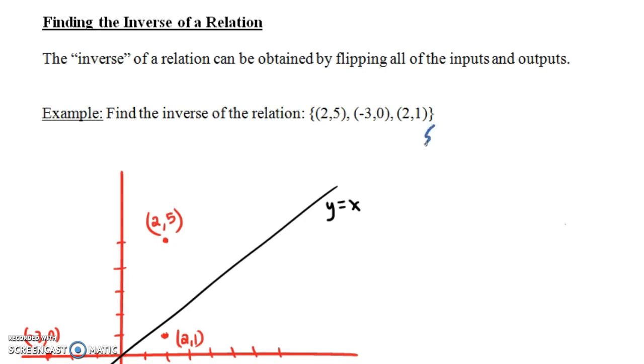What is the inverse relation going to look like? Well, if we flip all these ordered pairs, instead of (2,5), we put (5,2); instead of (-3,0), we put (0,-3); and instead of (2,1), we put (1,2). This is the inverse relation.